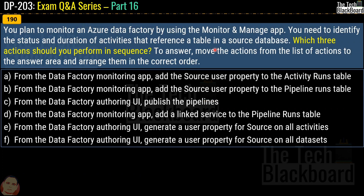Question number 190. You plan to monitor an Azure Data Factory using the Monitor and Manage app. You need to identify the status and duration of activities that reference a table in the source database. Which three actions should you perform in sequence? The options are: (A) from the Data Factory monitoring app, add the source user property to the activity run table; (B) from the Data Factory monitoring app, add the source user property to the pipeline run table; (C) from the Data Factory authoring UI, publish the pipelines; (D) from the Data Factory monitoring app, add a linked service to the pipeline runs table; (E) from the Data Factory authoring UI, generate a user property for the source on all datasets.